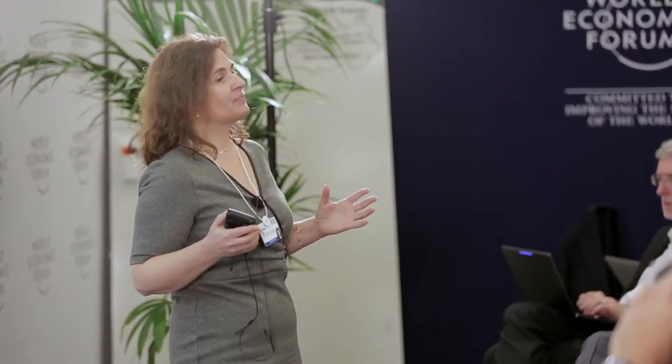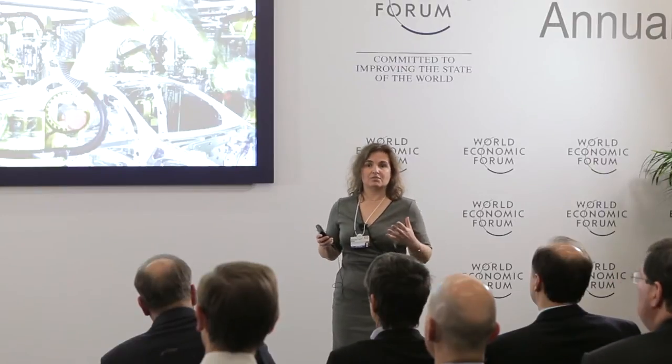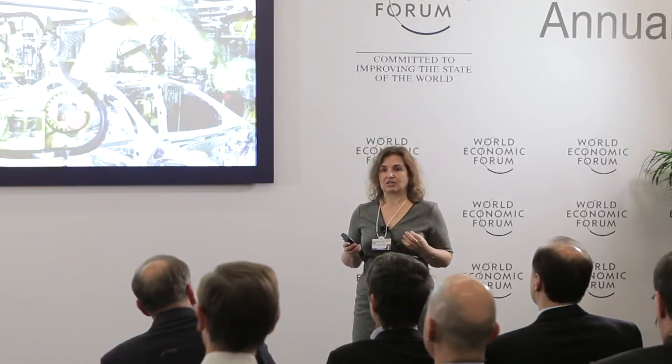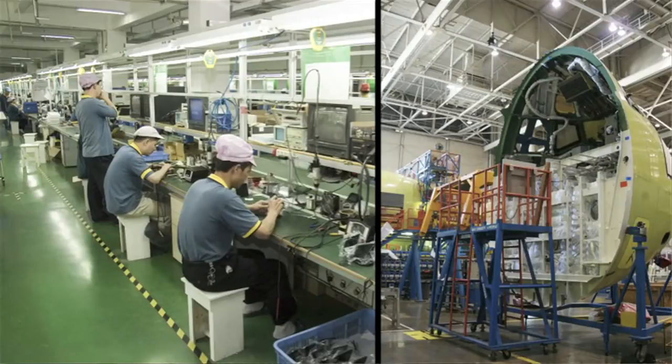Right now, developing tools and robots is done in a customized way and this takes years. This has caused manufacturing to lag in automation. For example, car manufacturers can automate 80% of their tasks because they can take advantage of high volume and repetitive processes. But in contrast, the electronics industry automates only 10% of the tasks, and plane manufacturers only about 30%.